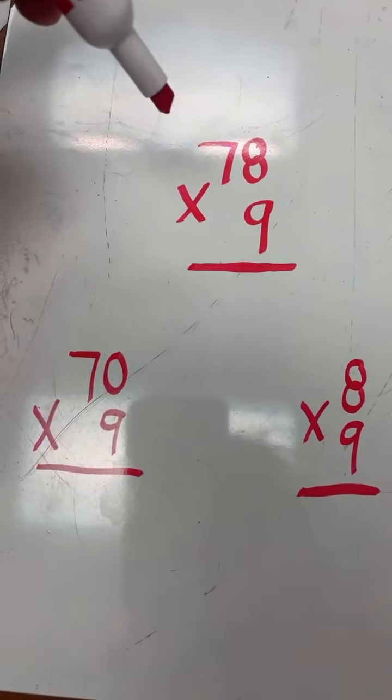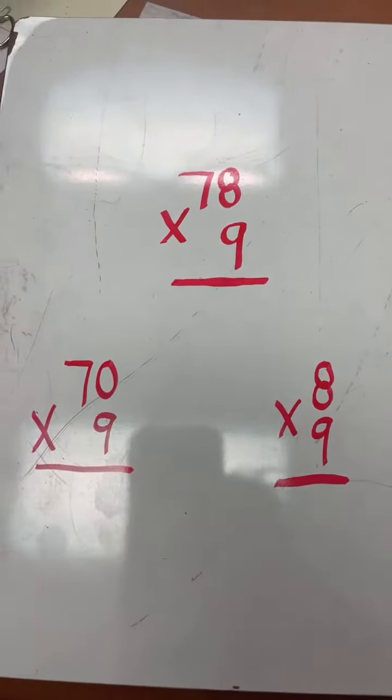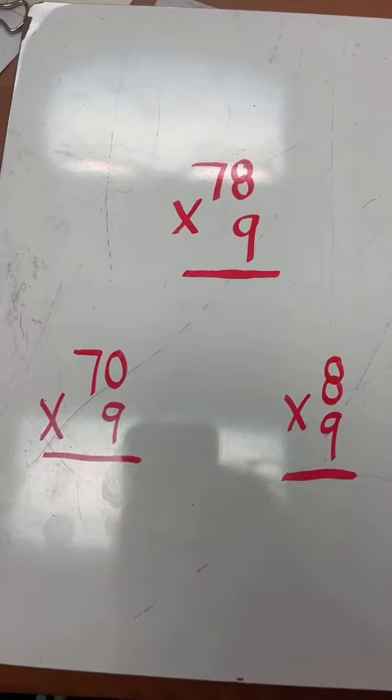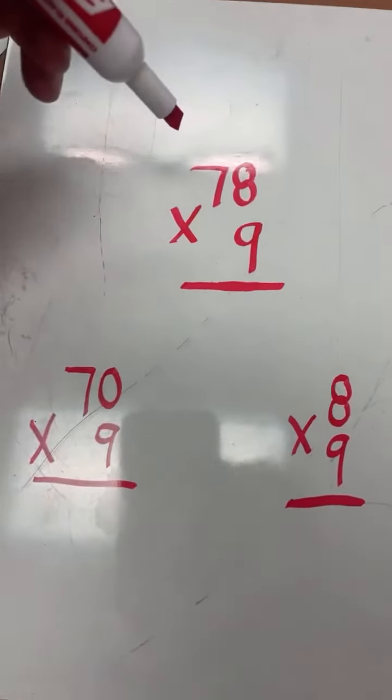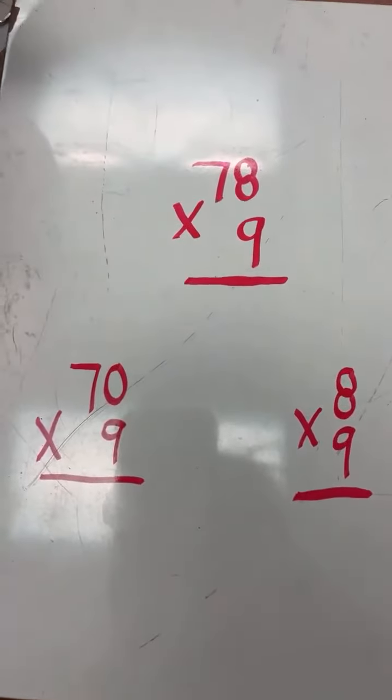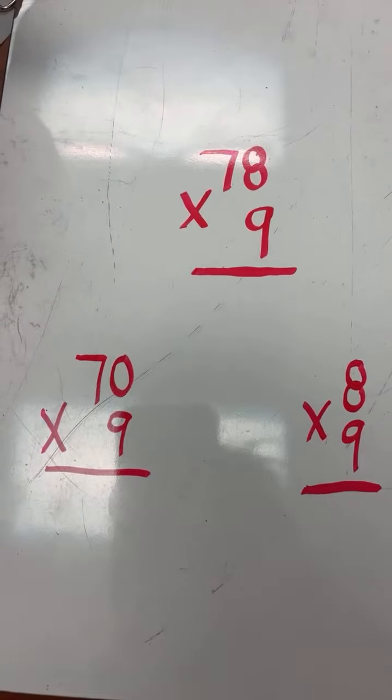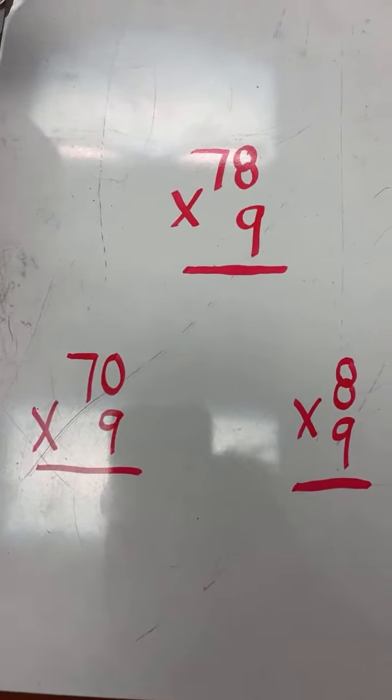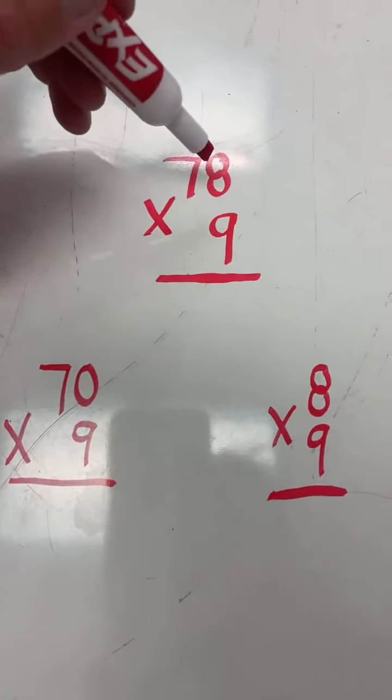So basically, the partial product method involves breaking down a two-digit multiplication problem digit by digit. So we multiply the numbers in the ones place, we multiply 8 times 9, and then we multiply the value of the digit in the tens place times 9.